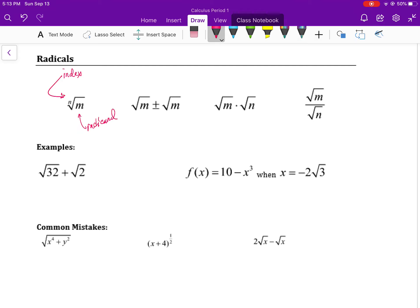The radicand is whatever we're performing the radical on, which could just be a number or some type of expression. The index is the number of things you want to multiply by themselves in order to get the radicand.